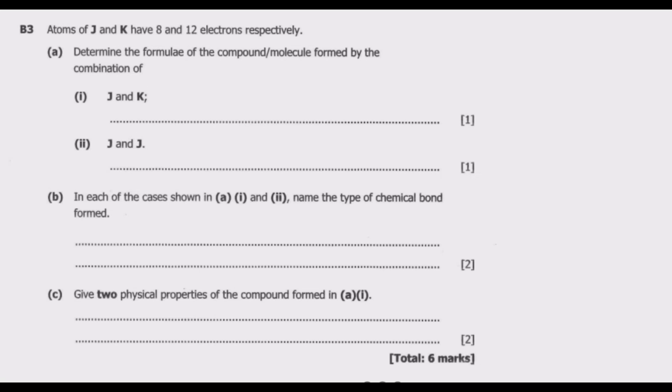Let us start with J. J has 8 electrons. The first shell will have 2, the second one is 8 minus 2 which is 6. Since 6 is less than 8, the valence of J will be 2. It will need 2 additional electrons to complete the outer shell.